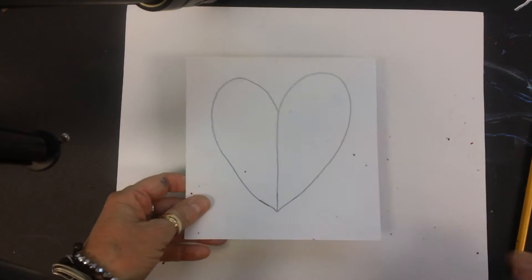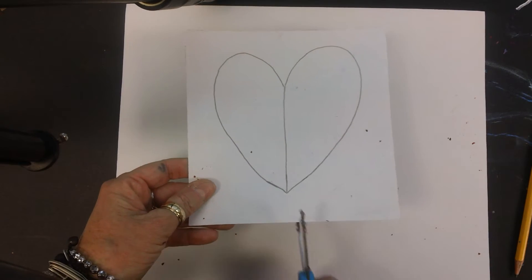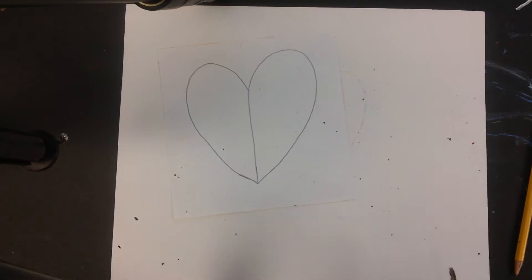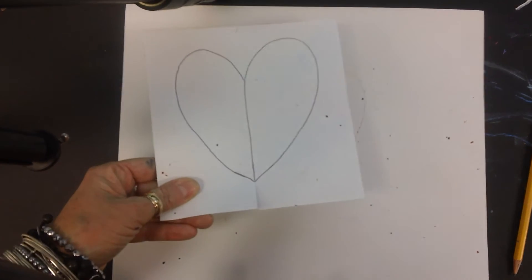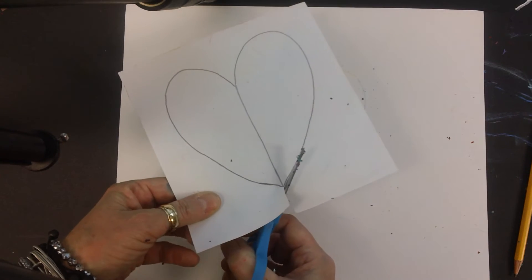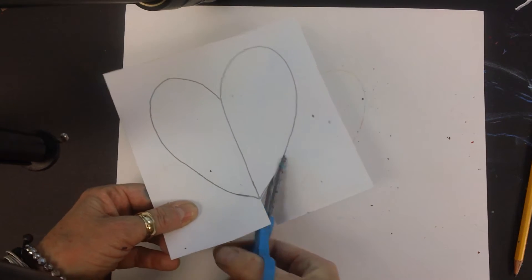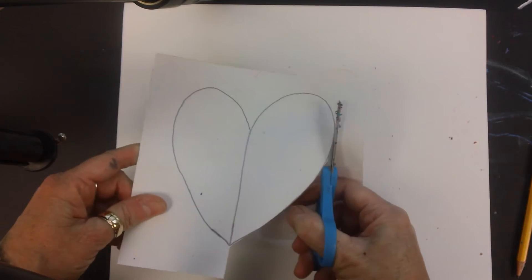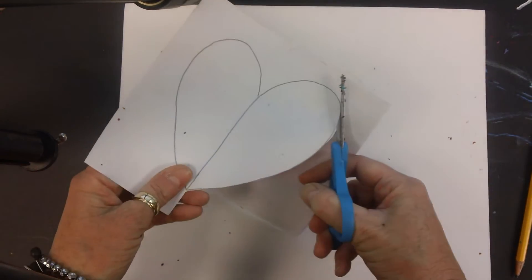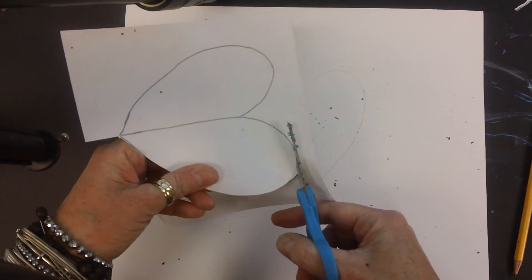Alright, so now I have to cut this out and another way to do that is to just take your scissors and I'm going to cut right up to the bottom of that heart. And I'm just going to follow that all the way around. Now there's a couple other ways to do this as well, but for this video I wanted to show you this way.